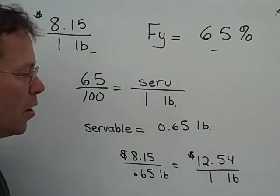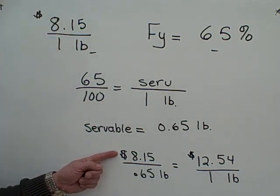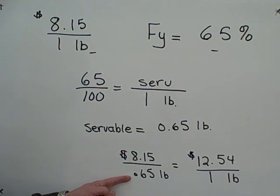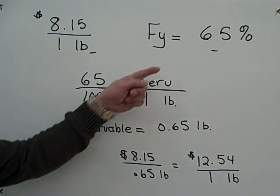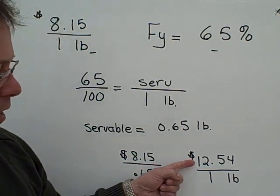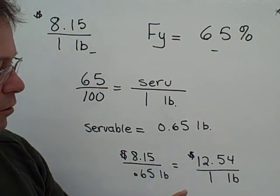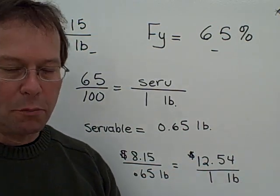So what we're really doing is putting one on this side, $8.15 but 0.65 of reduced material for the 65% food yield, and that works out to $12.54 per servable pound.